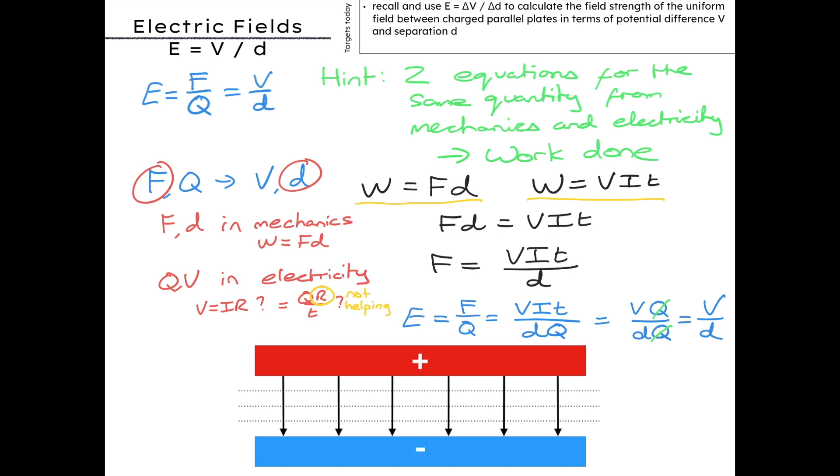P equals VI equals VQ over T looks better. Power might seem unrelated, but we've already considered W above, so let's change it to E equals VIt equals VQ T over T. Canceling out, E equals VQ.